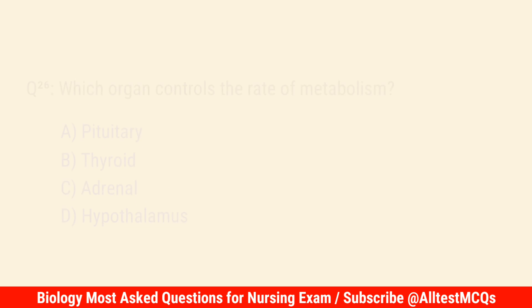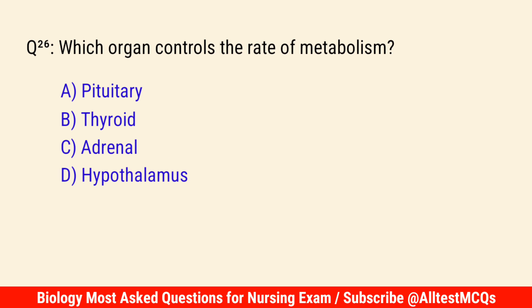Q26. Which organ controls the rate of metabolism? The correct answer is B: Thyroid.